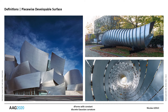Halfway between smooth and discrete, semi-discrete geometry consisting of a patching of developable surfaces has been widely explored, in particular for constructive reasons. Its property of being isometric to the Euclidean plane makes it particularly relevant for forming complex façade panels from standard flat elements, usually sold in sheets or coils.